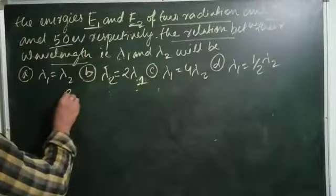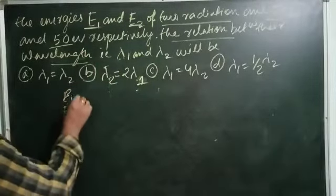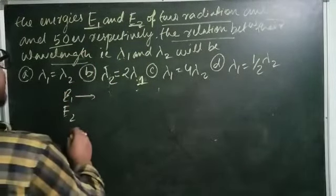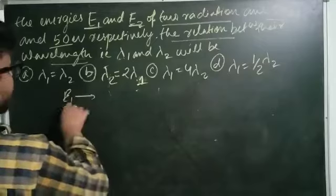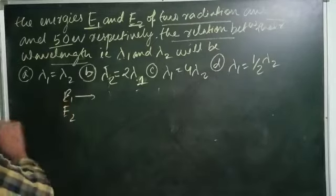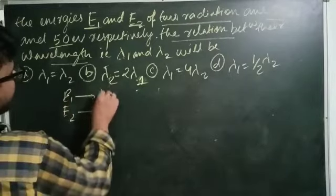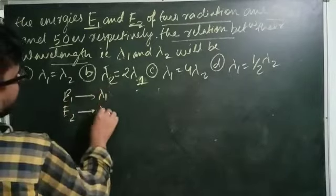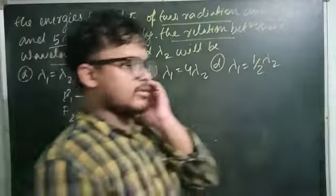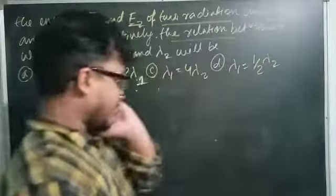The energy is E1 and E2, so the energy is 25 and 50 electron volt. Lambda 1 and lambda 2 will be related by the following relation.